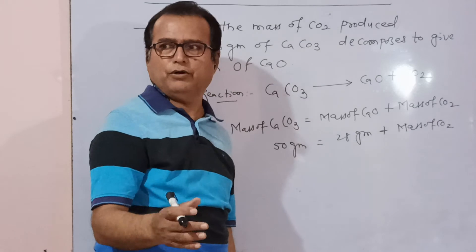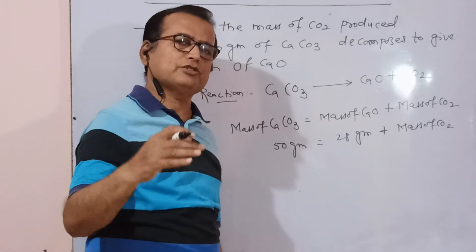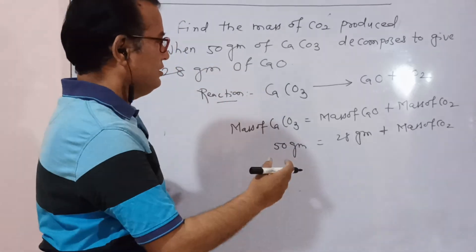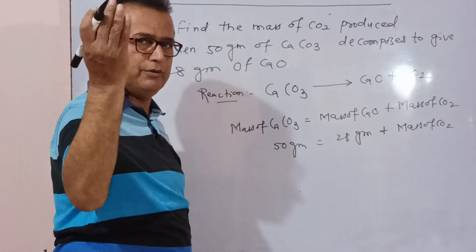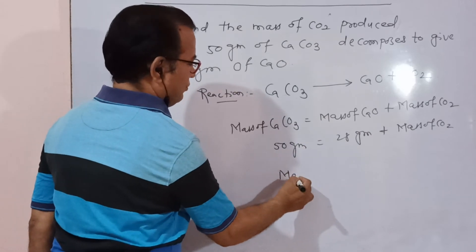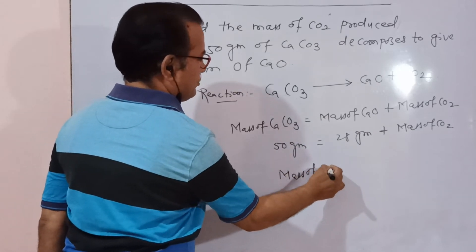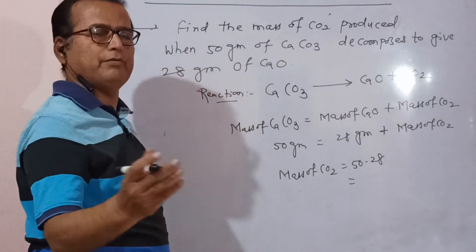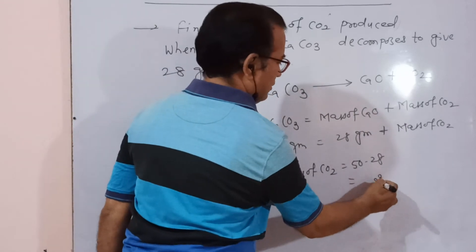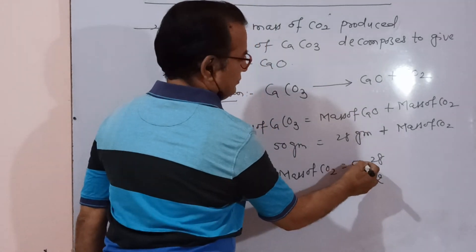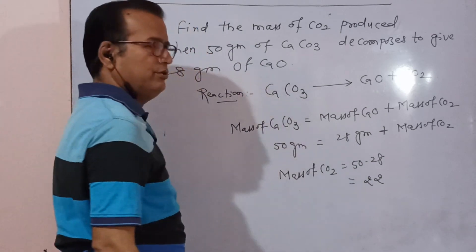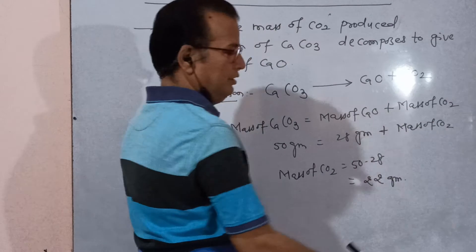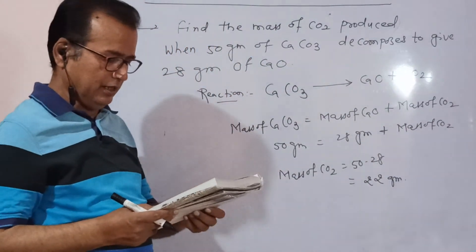After this simple problem, after this basic part, we must conclude. Mass of CO2 is equal to 50 minus 28. Now 50 minus 28 equals 22. 22 gram is the answer.